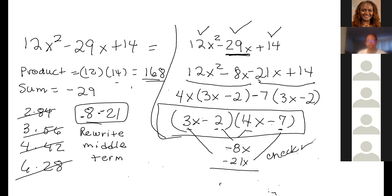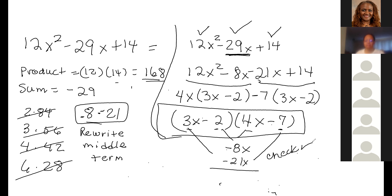That's 5.2. Let's take a five-minute break because I do have to do 5.3. In class we'd just get up and relax, but I want to start 5.3 to stay on schedule. It's 10:13, so let's come back at 10:18.